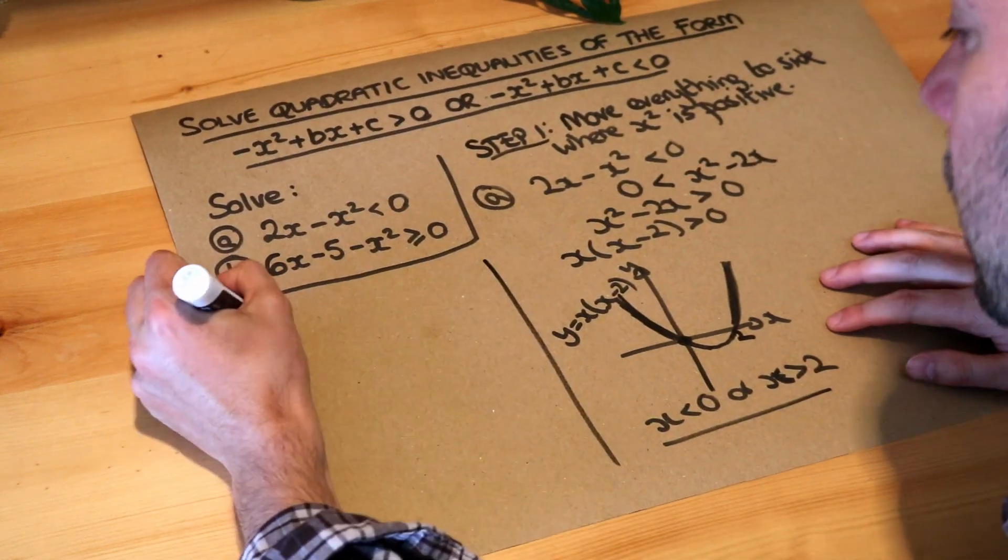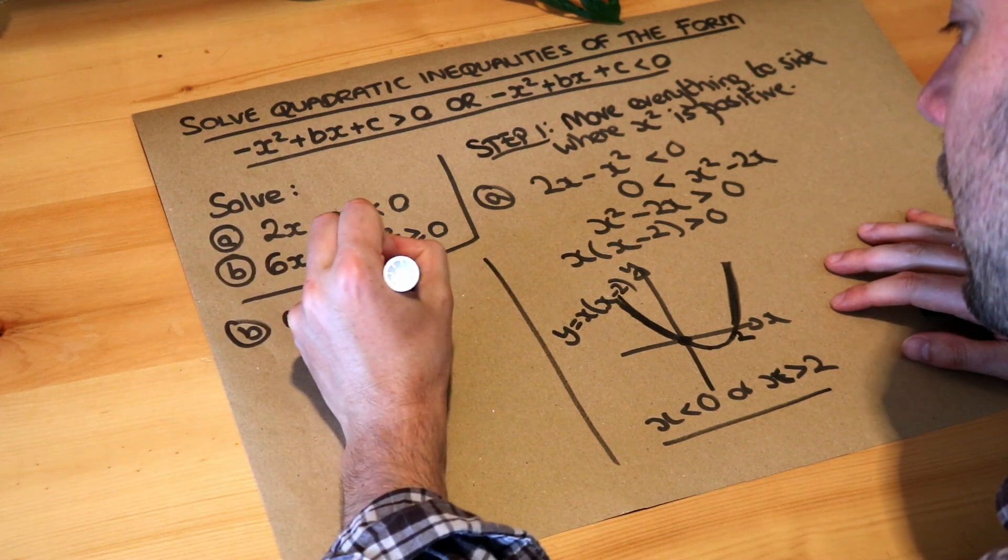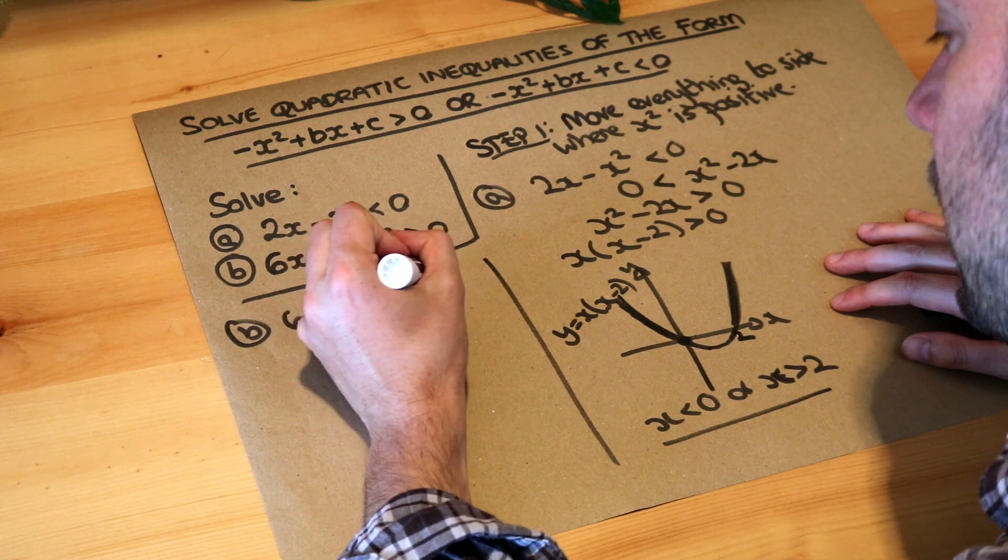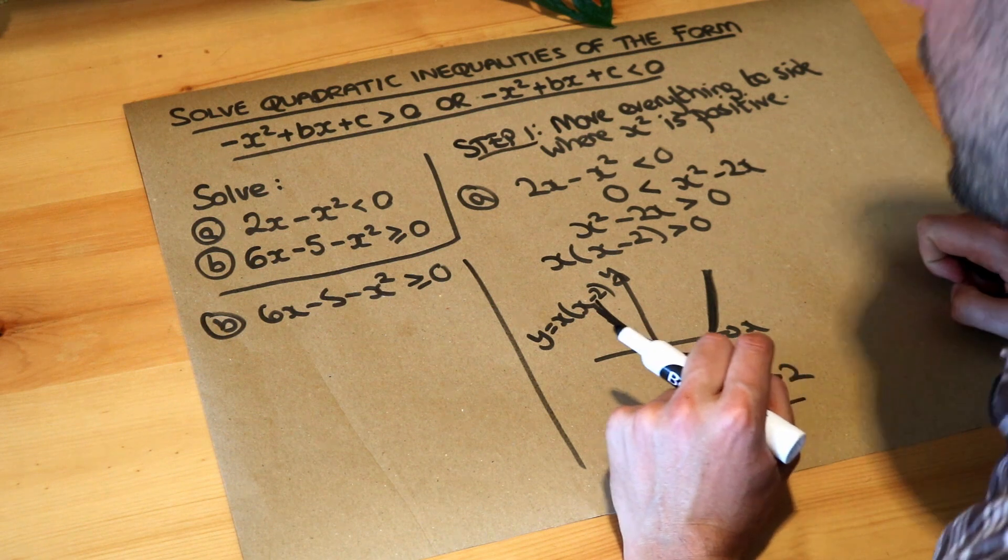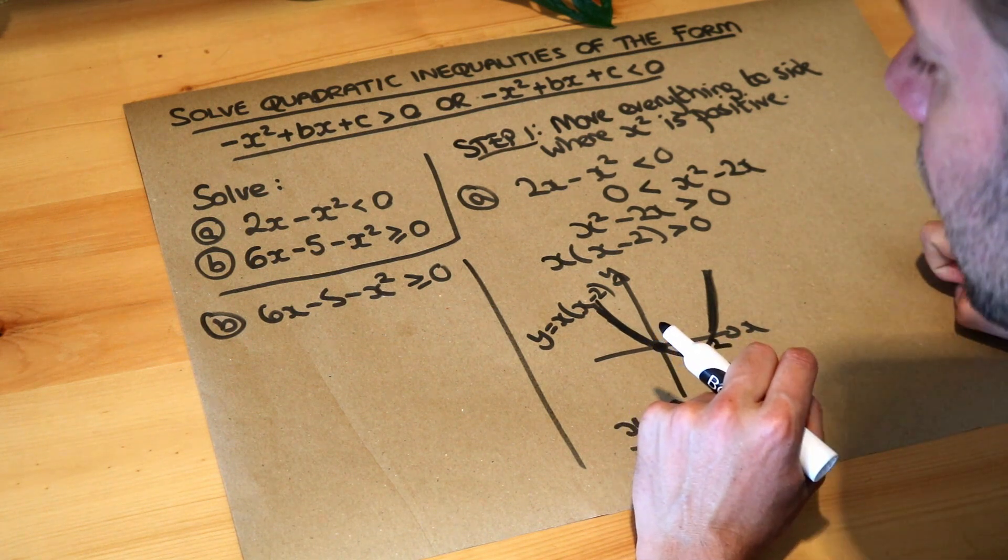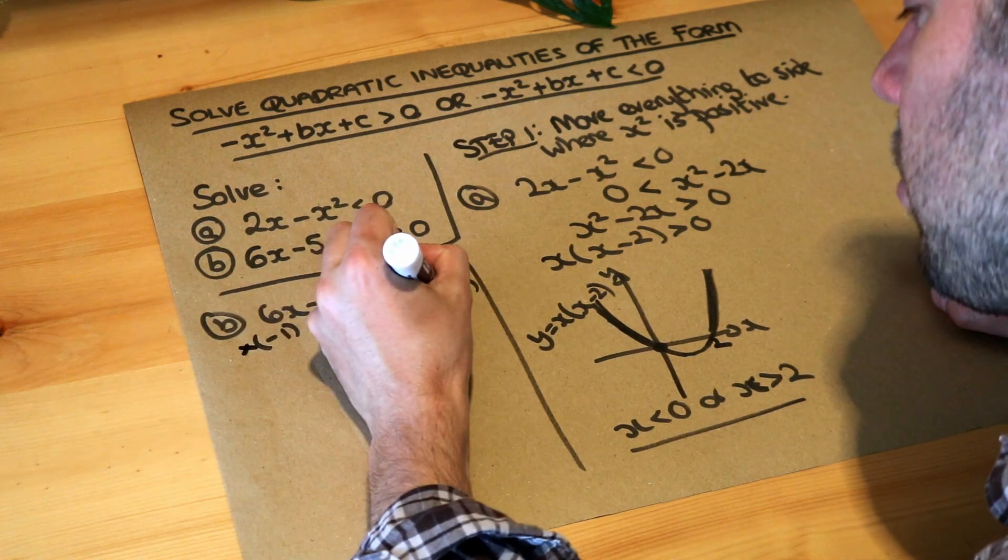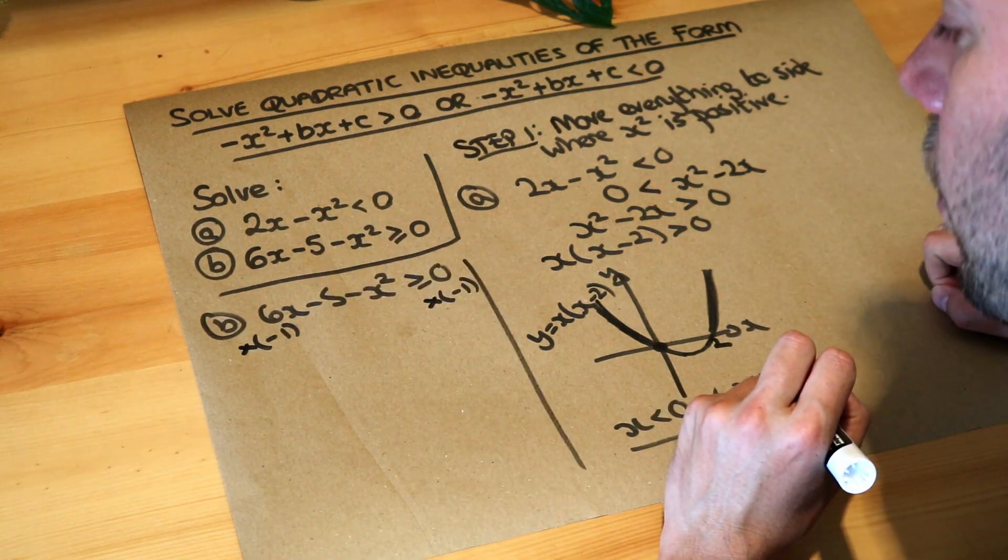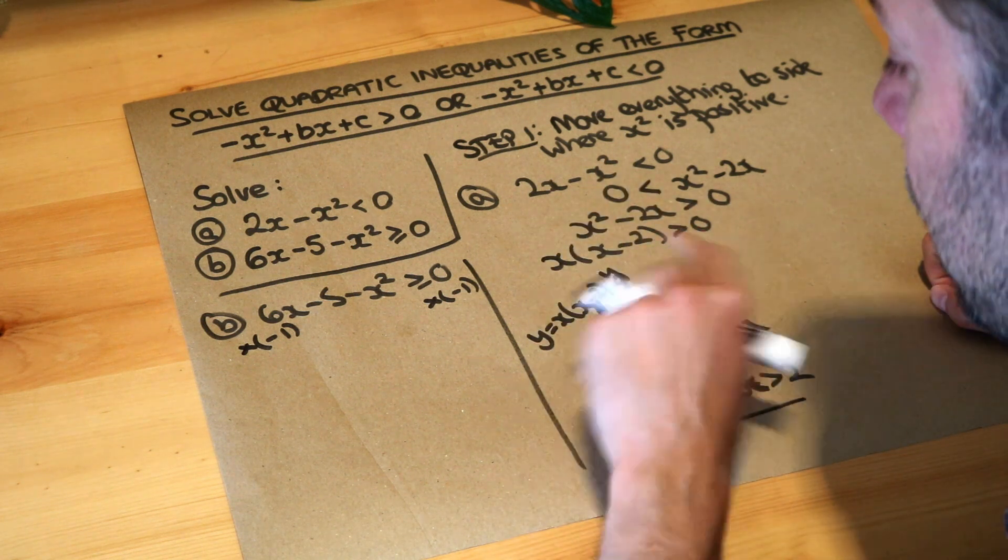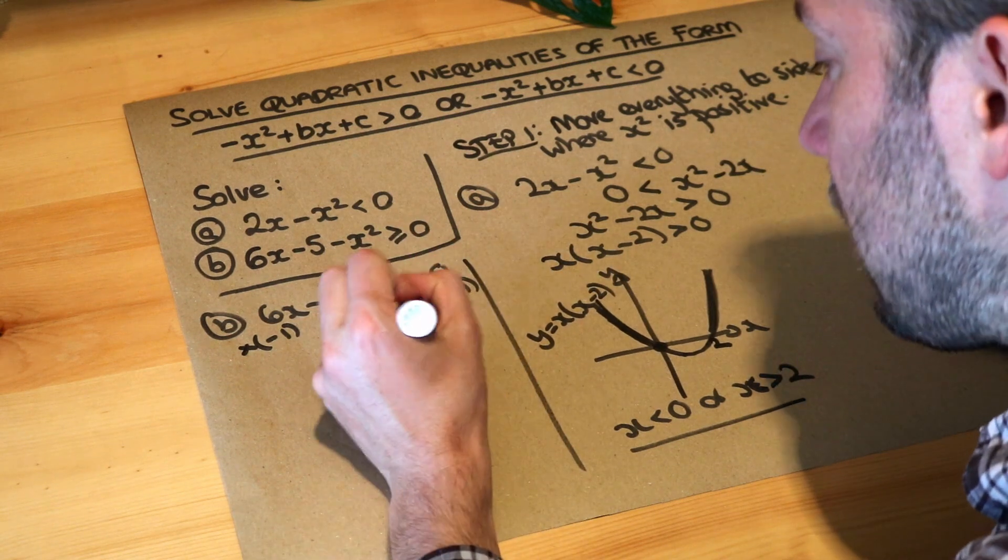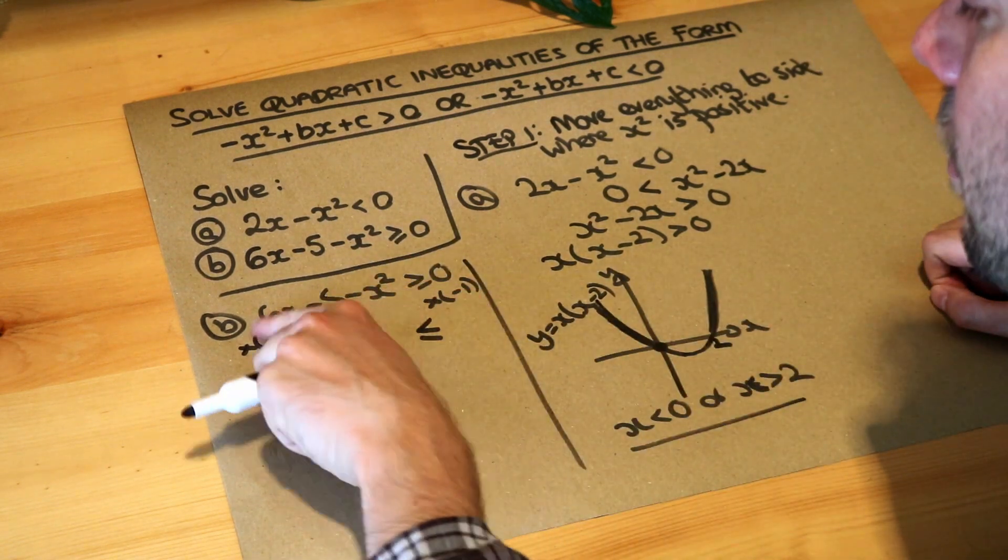Now let's do b. So we've got 6x minus 5 minus x squared is greater equal to zero. Now I'm going to do what we did here but actually more quickly. And there's a little trick. If you just times both sides of the inequality by minus one, whenever you times or divide an inequality by a negative number it actually changes the direction so that greater or equal to becomes less than or equal to.